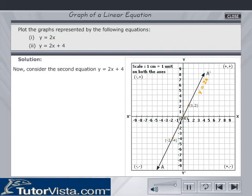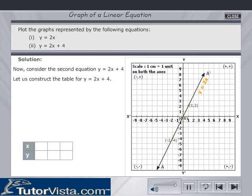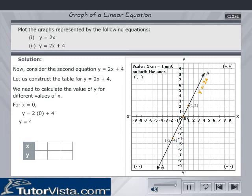Now consider the second equation, y is equal to 2x plus 4. Let us construct a table for this equation by choosing suitable values of x and calculating the corresponding value of y. For x is equal to 0, y is equal to 2 into 0 plus 4, which is equal to 4. Point 0, 4 is plotted as shown.